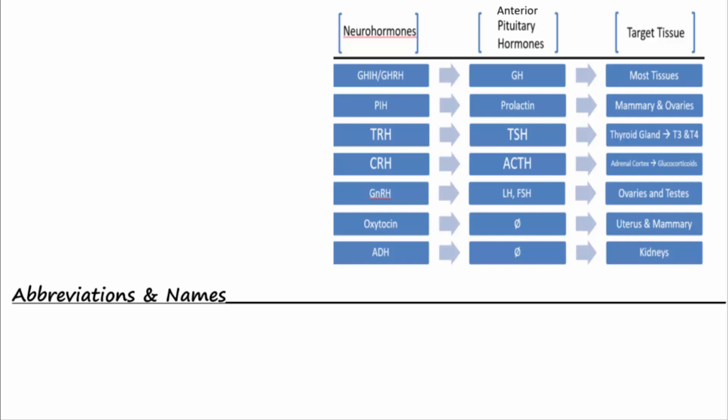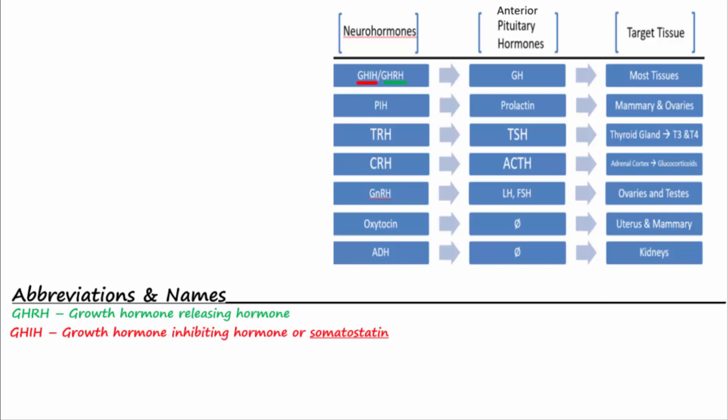Growth hormone releasing hormone, or GHRH, and growth hormone inhibitory hormone, or GHIH — also known as somatostatin — are released from the hypothalamus and act on the anterior pituitary to influence the release of growth hormone, abbreviated GH, also known as somatotropin. GHRH increases the release of growth hormone, and GHIH acts to decrease the release of growth hormone. When growth hormone is released into the blood, it acts upon most tissues to stimulate growth and regulate metabolism.